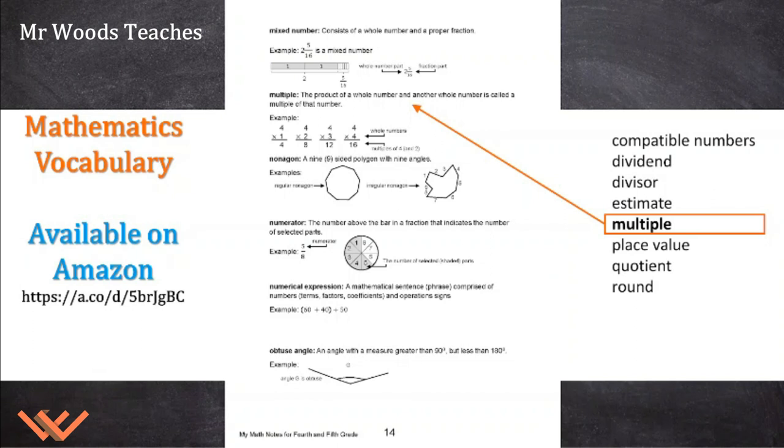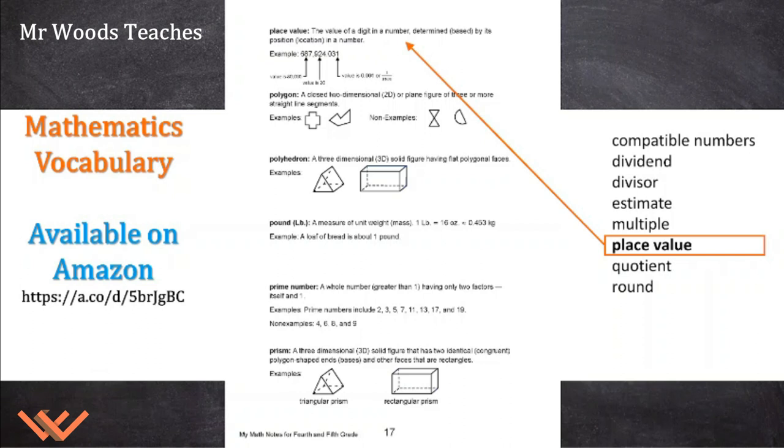Multiple. Multiple is a product of a whole number and another whole number. The example here is 4 times 1, 4 times 2, 4 times 3. All of those answers, or the products of that, they are multiples of 4. So 4, 8, 12, 16. Place value. You have to understand that there's 1s, there's 10s, 100s, 1000s, 10,000s, 100,000s, and later on there'll be decimals. We'll get more into that in a later video.